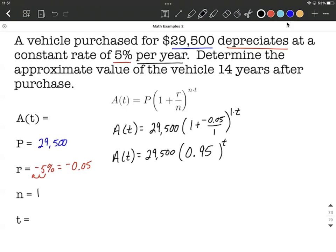So we're going to evaluate this when t is 14. So A of 14 is going to be 29,500 times 0.95 raised to the 14th power. I have to get the calculator out to help us on this one. This is going to be approximately 14,386.41188 is what my calculator gave me.